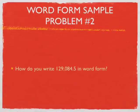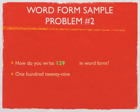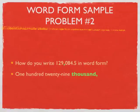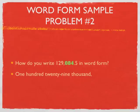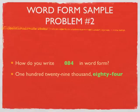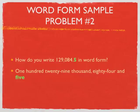Word problem number two: how do you write 129,084 and five tenths in word form? It's a big number, but no need to freak out — just break it down. We've got 129, so we write one hundred twenty-nine. Then the comma — always the word thousand. Then we see 084 — the zero's not worth anything, so just eighty-four. Then the decimal point — always the word AND. And finally, the five is in the tenths spot — five tenths. So: one hundred twenty-nine thousand, eighty-four, and five tenths.